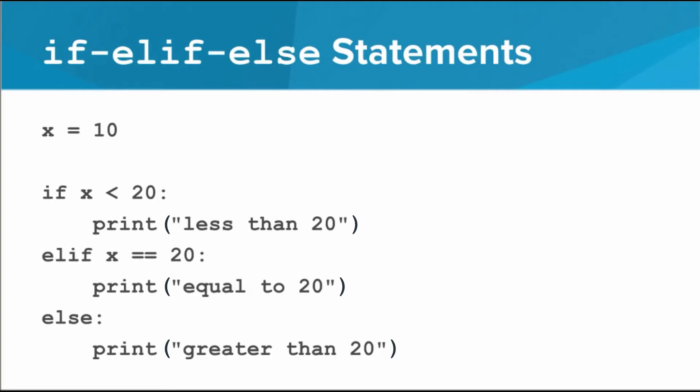Now let's look at this. There are three possible pieces of code that the Python interpreter might execute. Each of these pieces of code is called a branch. Only one of them will ultimately run. The second one, under the word elif, will only execute if the first condition is false and the elif condition is true. The last one, under the word else, will only execute if the first condition is false and the second condition is false.